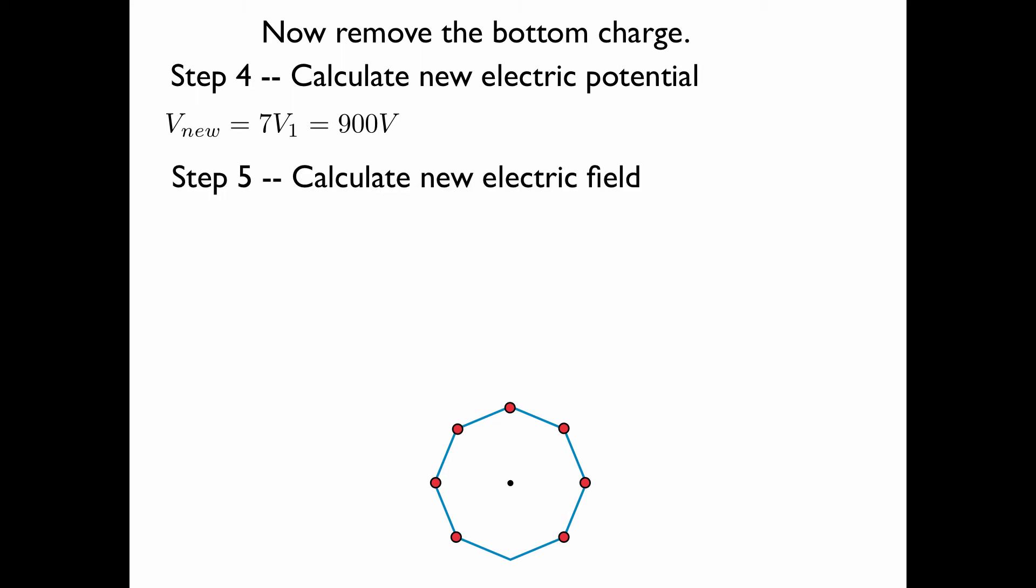Step five will be to calculate the new electric field. Now notice that three of the pairs of charges still cancel each other out, but the top and the bottom pair no longer cancel each other out because the bottom charge has been removed. So therefore, the only charge which contributes to a net electric field at the center will be the top charge, and it's pointing straight downward.